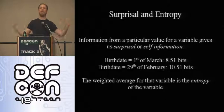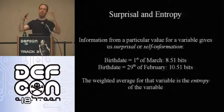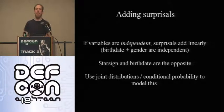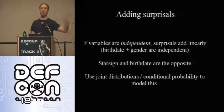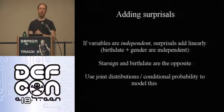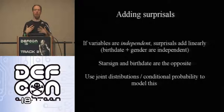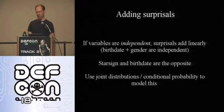We can also talk about the entropy of this type of measurement, which is the expectation value of the surprisal across a probability distribution. We have a paper on our website with all the mathematics in more detail. One key point: you can't simply add surprisals together. Learning someone's birth date and then their city are roughly independent, so you can add bits. But if you already know their birth date, learning their star sign gives you no new information. To properly combine measurements, you need to use conditional probabilities.